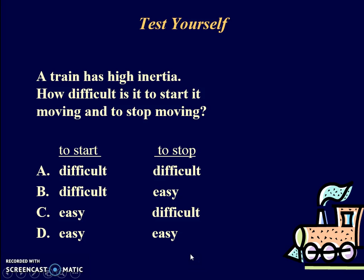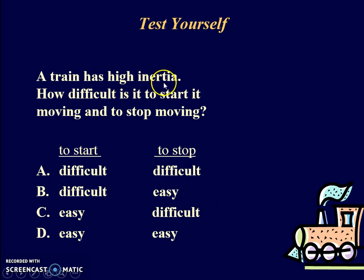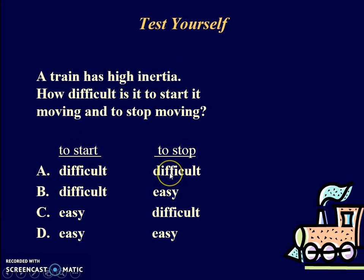Try this multiple choice question: A train has high inertia — how difficult is it to start it moving or to stop it? High inertia means high mass, so it will be difficult to start and difficult to stop. The answer is A.